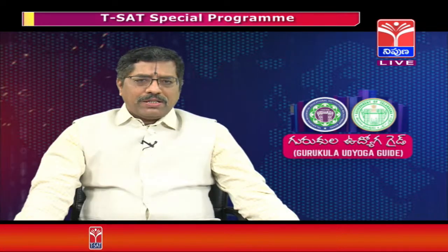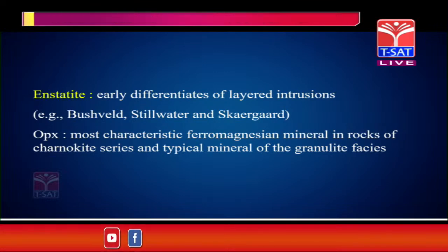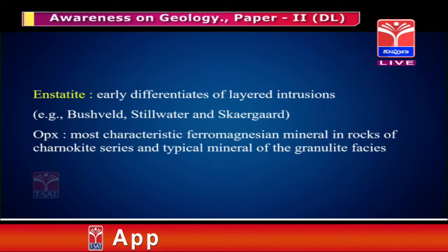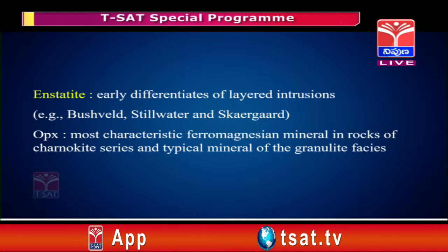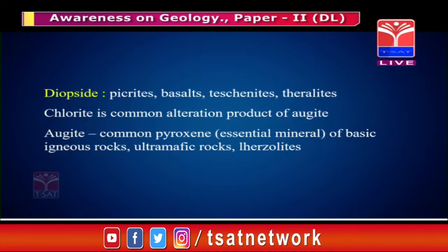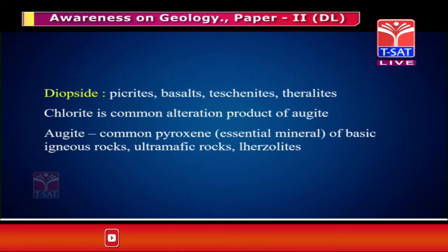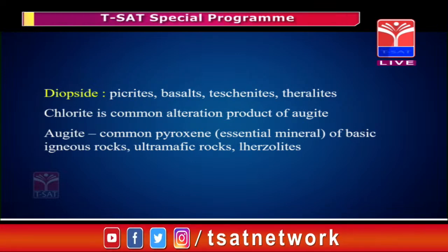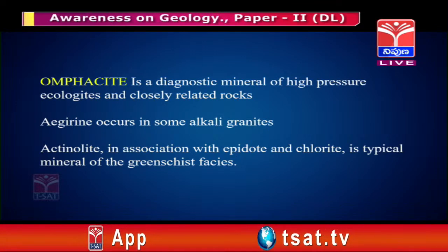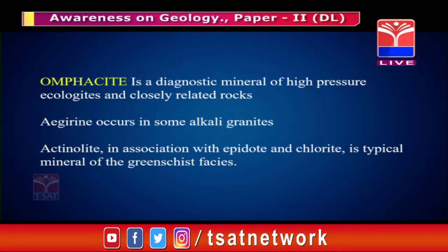For the orthorhombic pyroxenes, enstatite occurs in early differentiates of igneous intrusions such as Bushveld, Stillwater, and Skaergaard. OPX generally means hypersthene. Hypersthene is the most characteristic ferromagnesian mineral in charnockite rocks, typical of the granulite facies. A frequently asked question is: what is the most important pyroxene mineral in the granulite facies? The answer is OPX, not CPX. Diopside occurs in picrites, basalts, testinites, and lherzolites. Augite alters to chlorite, which is the main alteration product of augite. Omphacite is a very high-grade pyroxene mineral occurring in eclogite series — it is a diagnostic mineral of the eclogite high-pressure facies. Aegirine, the Fe3+ mineral, occurs only in alkali granites.